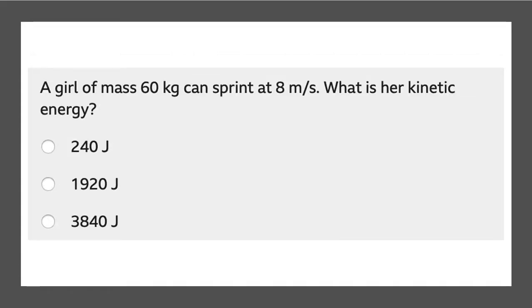Our final question. A girl of mass 60 kilograms can sprint at 8 meters per second. What is her kinetic energy? So let's write our equation. 0.5 multiplied by the mass multiplied by the velocity squared. So we have 60 kilograms which is in the correct units. So we can do 8 squared.